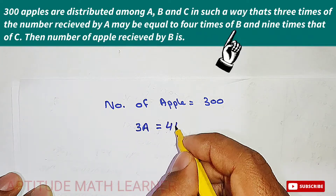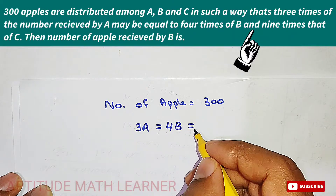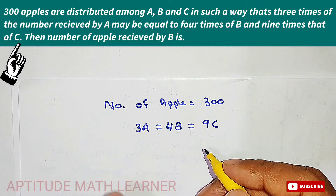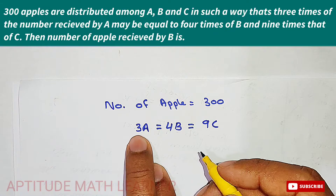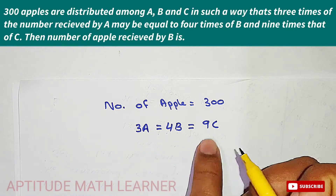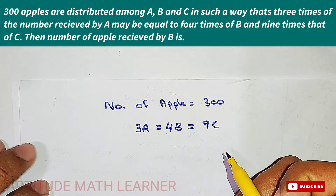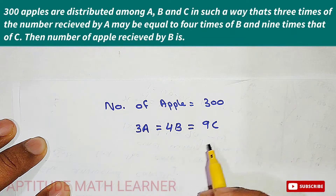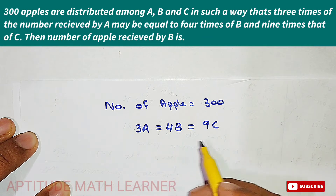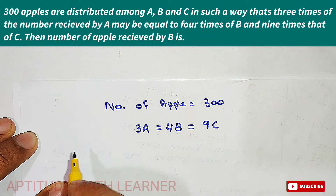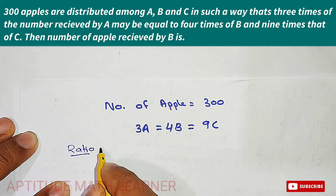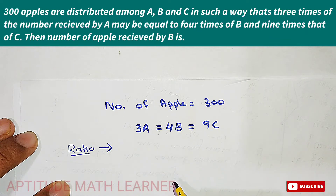Four times of B and nine times of C. So three times of A is equal to four times of B and is equal to nine times of C. The first thing we have to do is find out the ratio for A, B, and C.